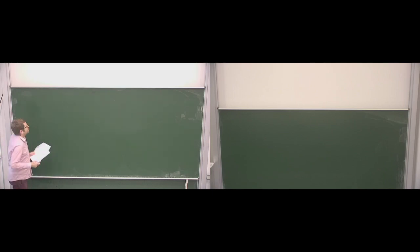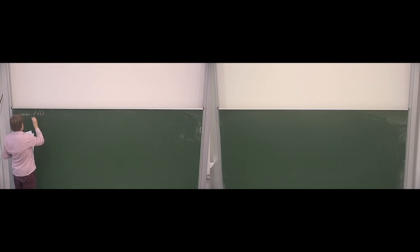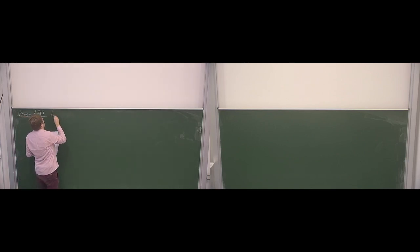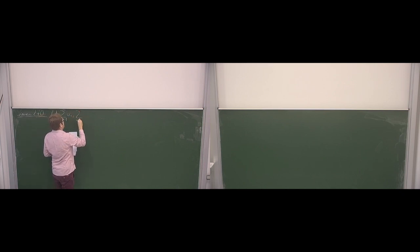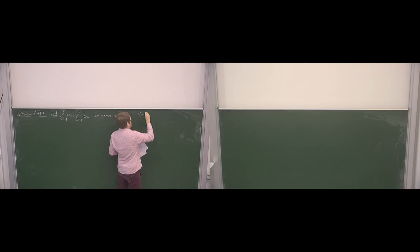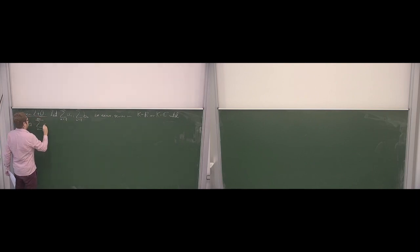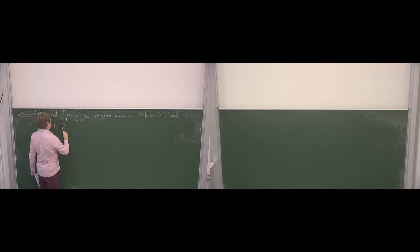Just one more thing before the convergence test. The rules for limits of series are very similar to those for general sequences, so I will write them down explicitly. This is basically just a special case of the theorem from section 2.1. Namely, if we have two convergent series, sum over a_n and sum over b_n, convergent in k equal to ℝ or k equal to ℂ, and we give the limits names — a is the limit of the series over a_n, and b is the limit of the series of b_n.